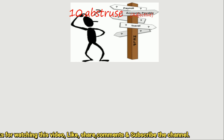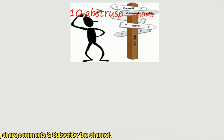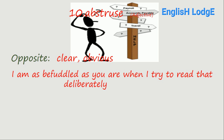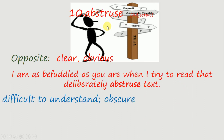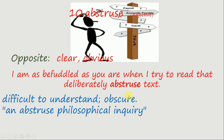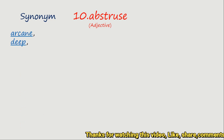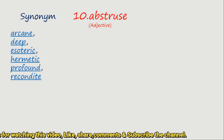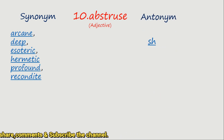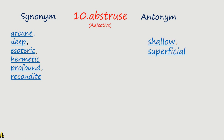This is very difficult to understand. The opposite word here is clear or apparent. Example sentence: 'I am as befuddled as you are when I try to read that deliberately abstruse text.' This is a very abstruse text also to understand. The meaning: difficult to understand — an abstruse philosophical inquiry. Synonyms: arcane, deep, hermetic, profound, recondite. Antonyms: shallow, superficial.